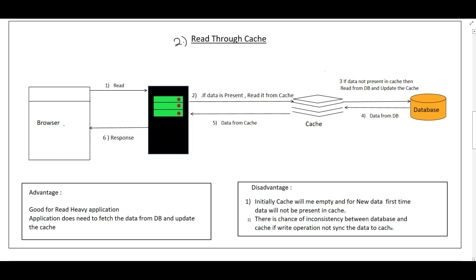The second read strategy is Read Through Cache. When the browser sends a read request to the application, the application first checks the cache. If the data is not in the cache, the cache itself is responsible for fetching the data from the database and returning it to the application, which then returns the response to the browser. The key difference from Cache Aside: in Cache Aside the application fetches from the DB if data is missing, but in Read Through Cache, the cache is responsible for fetching.